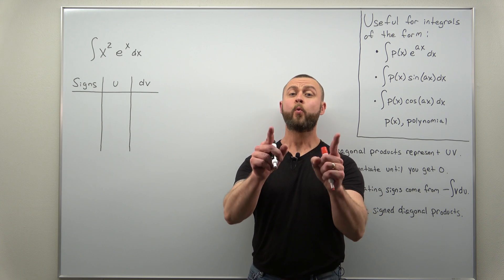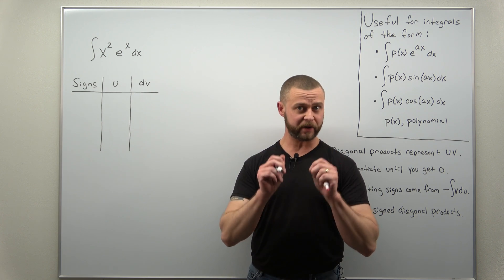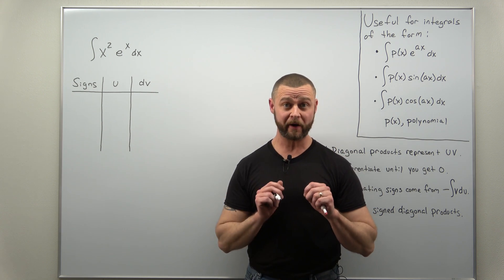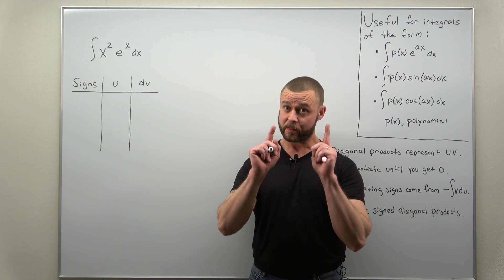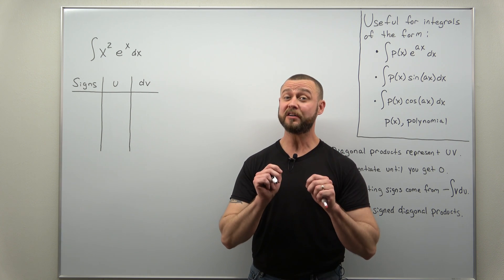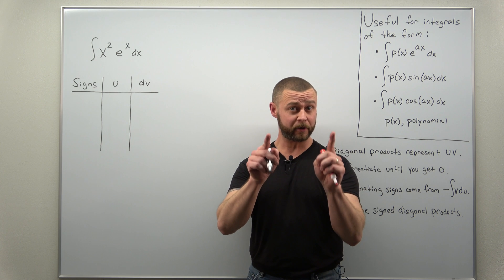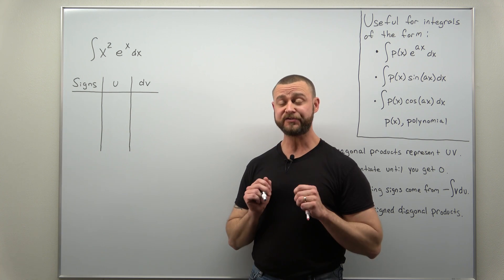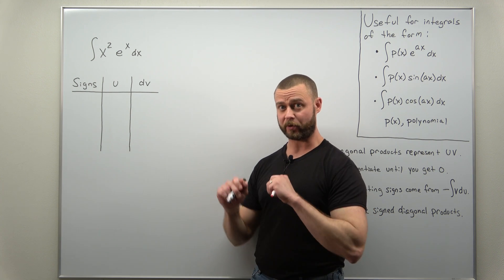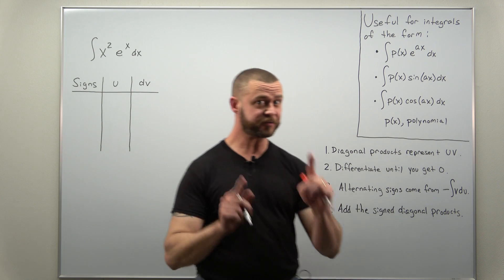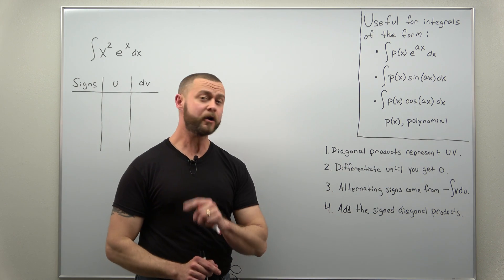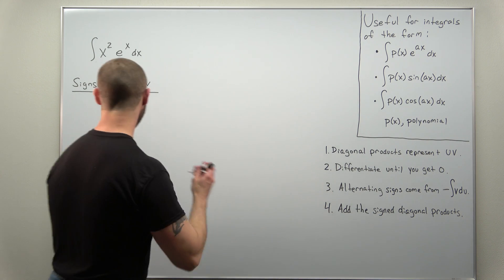For our first problem, we're going to take a look at a really simple integral: the integral of x squared times e to the x. The point is to just understand how the tabular method works and how to extract your answer from the table. We make all the same choices for u and dv. Here we would choose u as x squared.